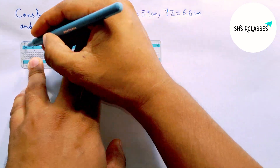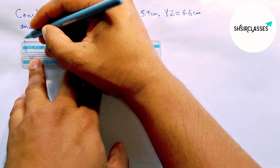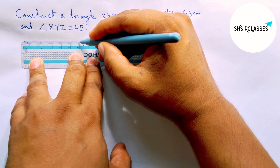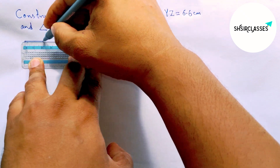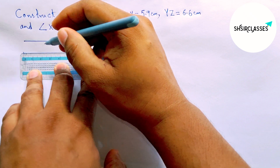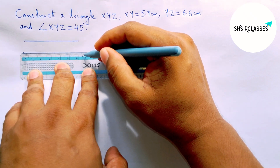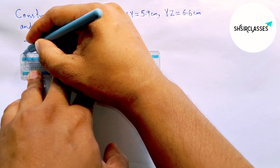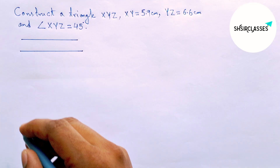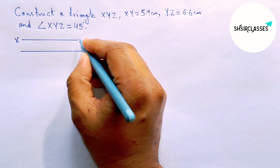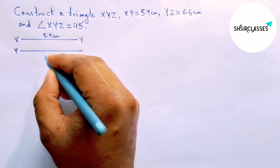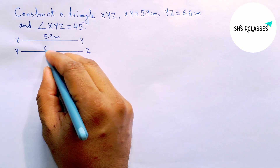First of all, let us draw the two given sides of the triangle. The first one is 5.9 centimeters — drawing this line segment. Now drawing another given line segment of length 6.6 centimeters. Labeling here: XY equals 5.9 centimeters and this one YZ equals 6.6 centimeters.